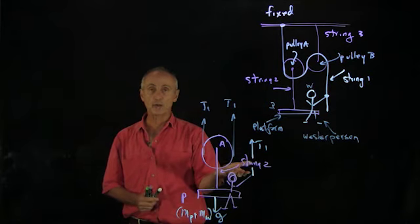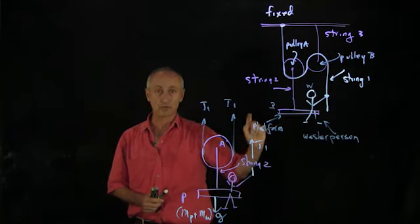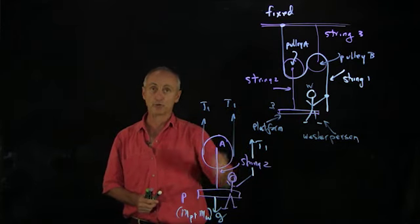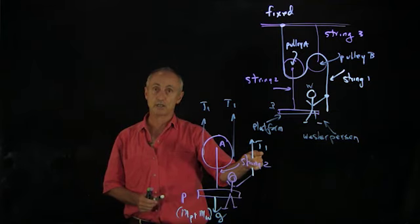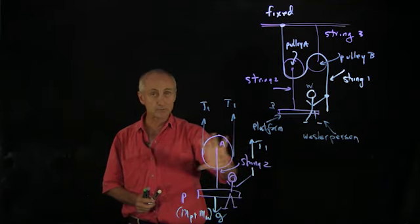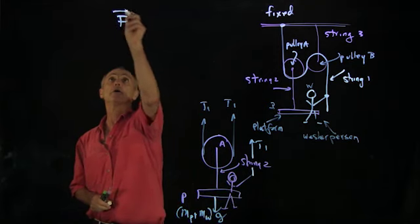If we measure the acceleration of the person, what is the force that the person pulls the rope down with? Well, of course, that will just be the tension in the string. And with this simple system, we can now apply Newton's second law.